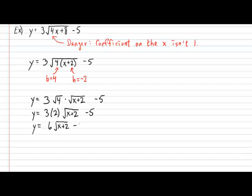So what the cleaning up procedure did is not only did it take out the B value, it combined the B value with the A value, and that's perfectly allowable.